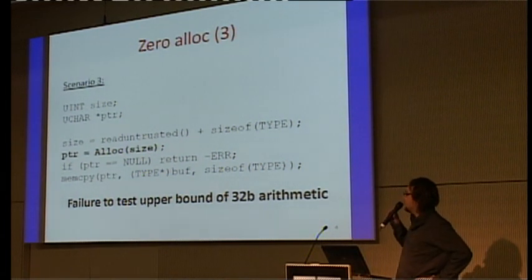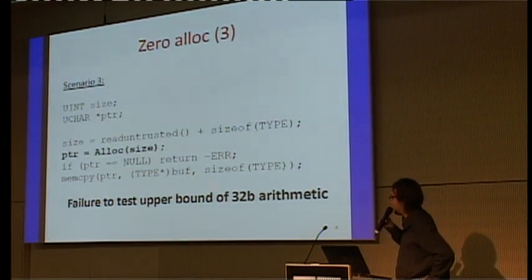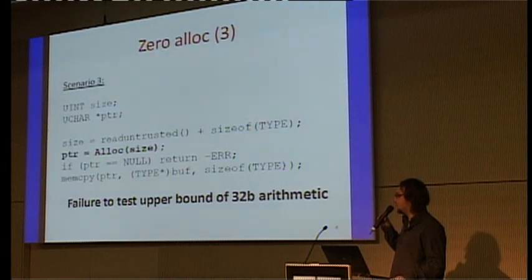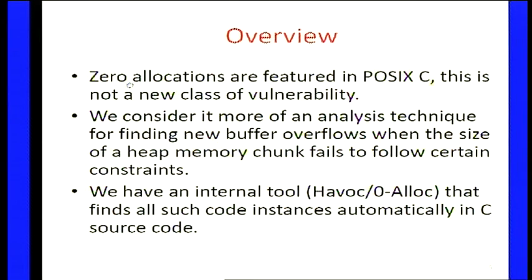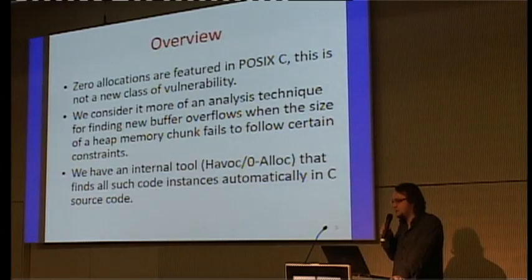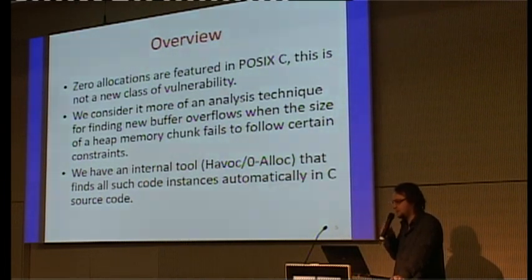The third scenario is not specific to zero allocation — it's the classic known case of integer wrap in an allocation. However, our characterization of zero allocation handles this case too, so it's a generalization of the integer wrap case. Zero allocations, in my opinion, are not a new kind of vulnerability. They are more a new technique to find a specific class of heap overflows. Because buffer overflows in general are very hard to get rid of, we want to restrict the attack surface to cases where the size could potentially be zero.